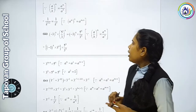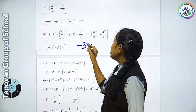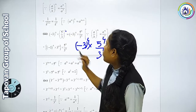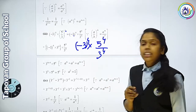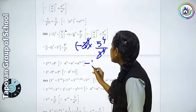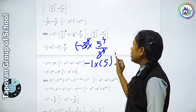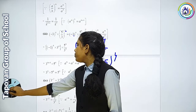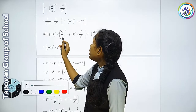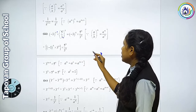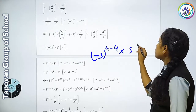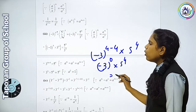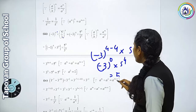Third number ki baat karte hain. Yahan minus 3 into uski power 4 — 5 raise to 4 and 3 raise to 4. Donho ka 4 hai. To ye ye cut ho jayega. Bachega: minus 1 into 5 raise to 4. Chalye phir se karte hain. Ye jo 3 hai upar jayega to minus kar sakti ho — iski power bhi 4 hai. To kar lete hain: minus 3 raise to 4 minus 4 into 5 raise to 4. 4 mein se 4 gaye to zero. Iski power zero, into 5 raise to 4. 3 raise to zero ka matlab hota hai 1. Into 1 karne pe same answer copy hoga — 5 raise to 4.